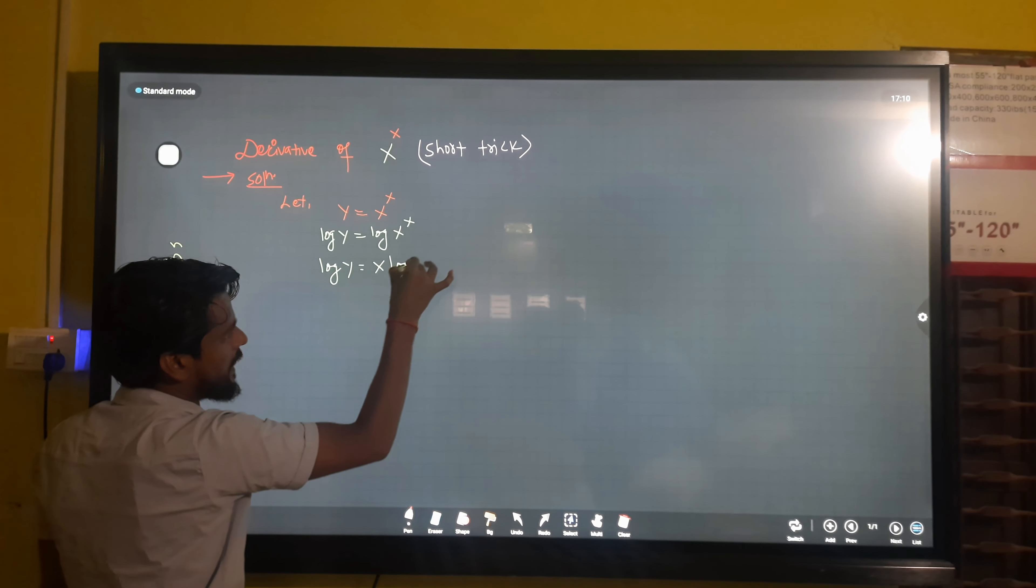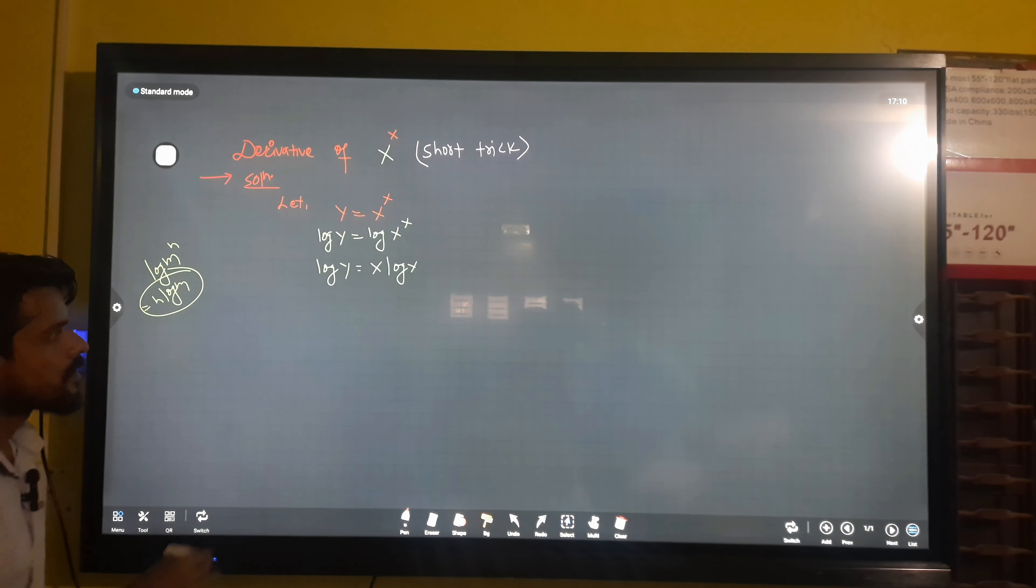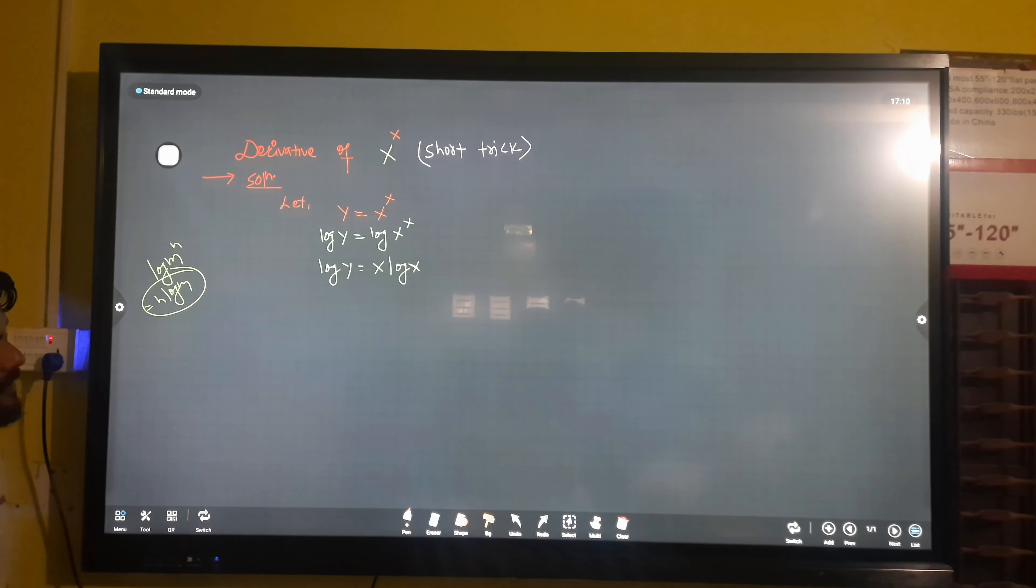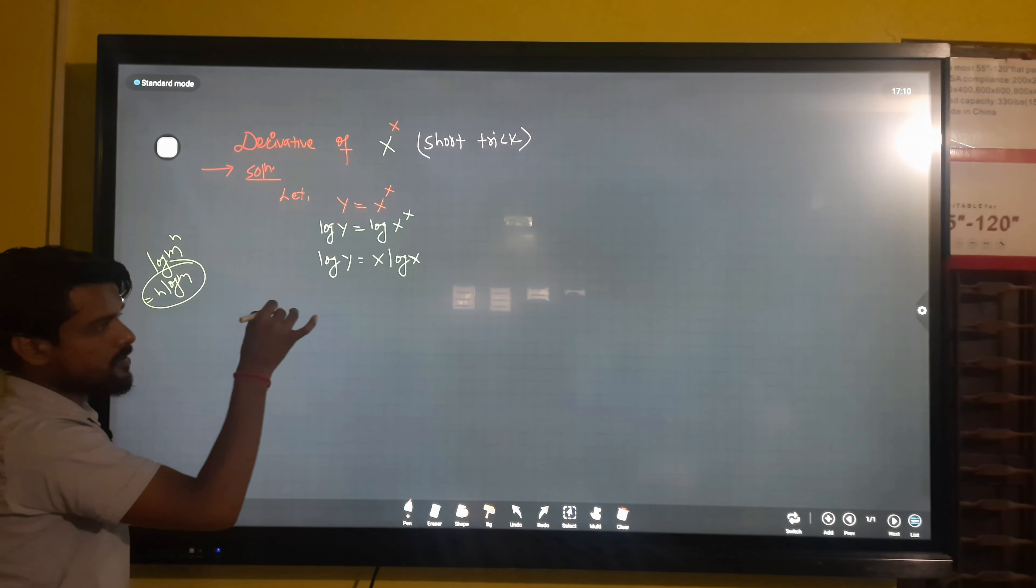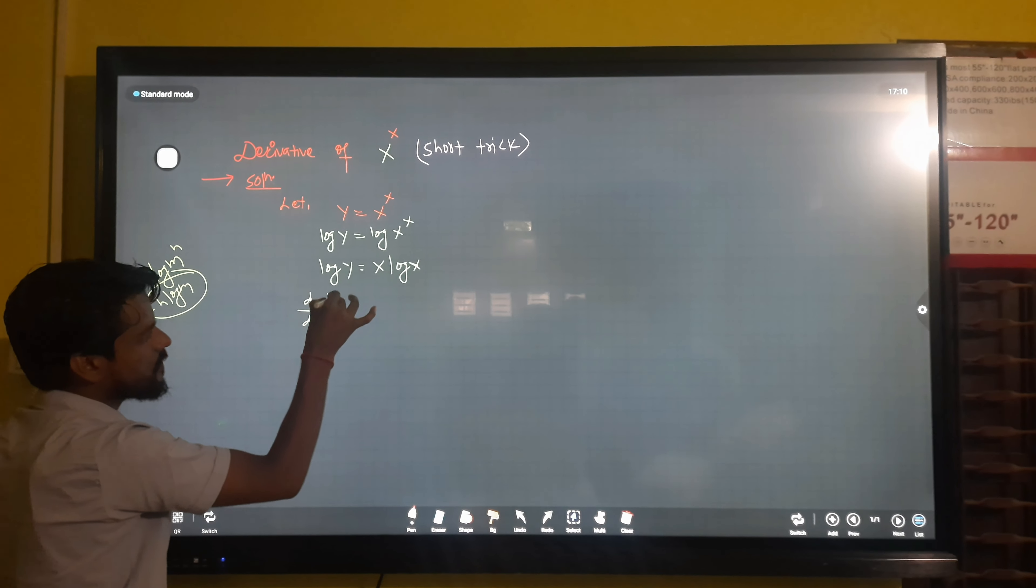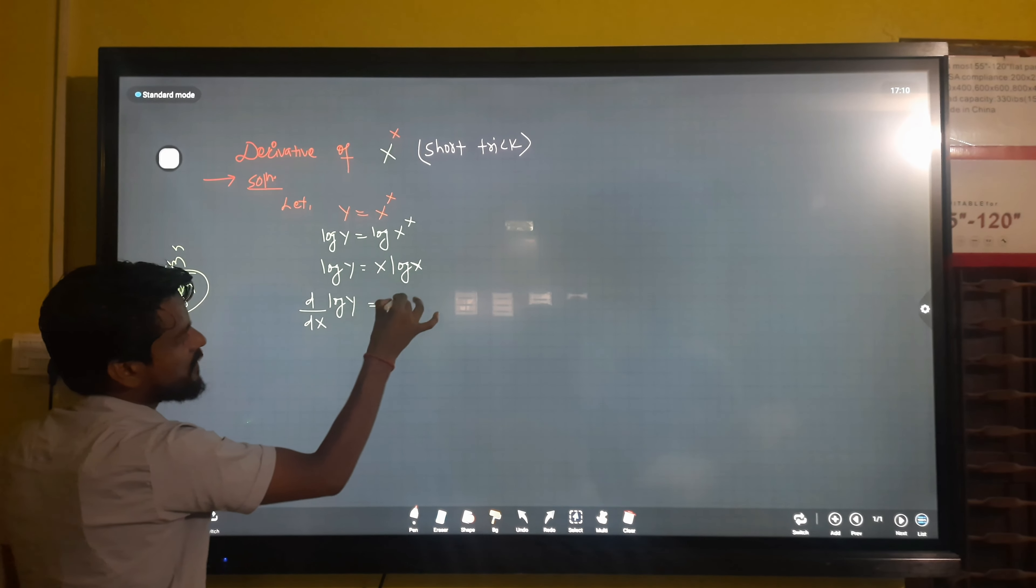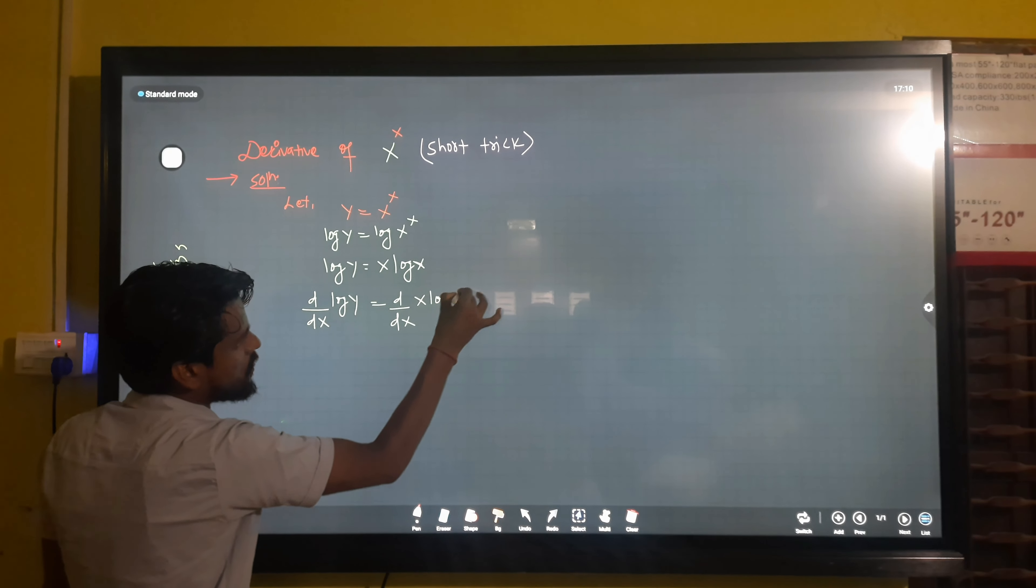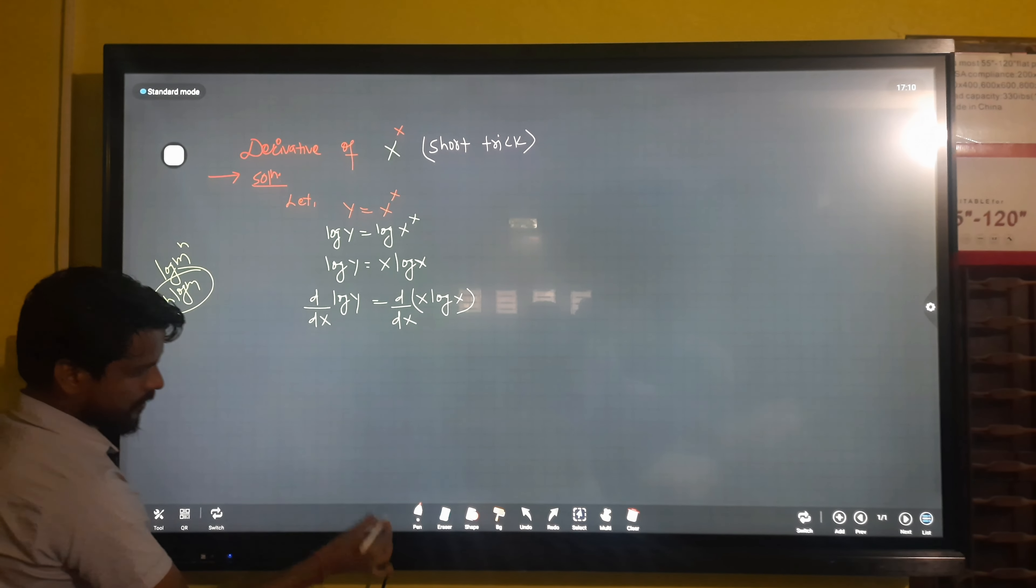So x log x. Now we need to take the derivative. That's why we have to take d by dx on both sides. D by dx of log y equals d by dx of x log x.